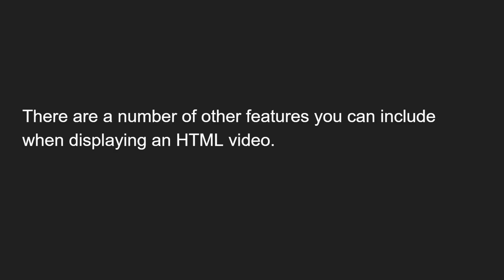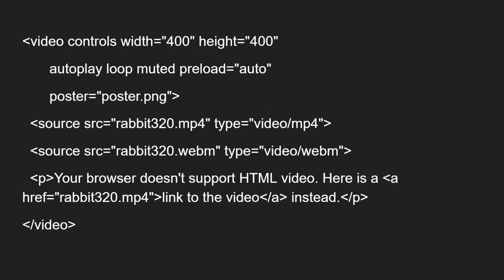There are a number of other features you can include when displaying an HTML5 video. Looking at the code snippet, I have added a video element which will show the video player in the HTML document. You need to open and close the video element, and it has a set of attributes: controls, width, height, autoplay, loop, muted, preload, and poster. These are the features available to control the video player options.